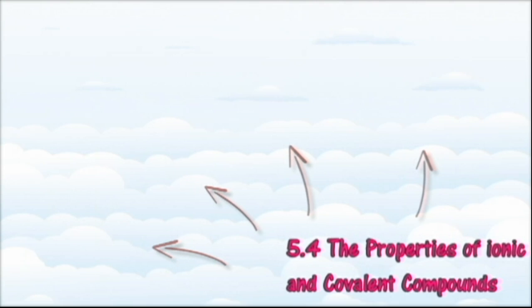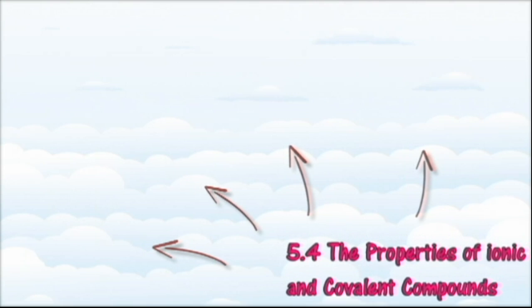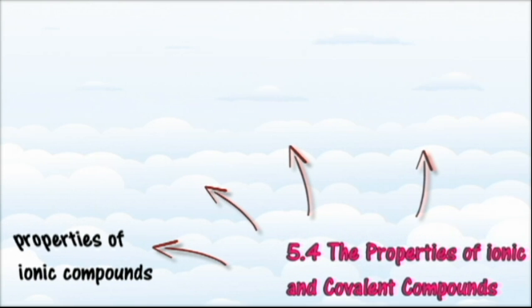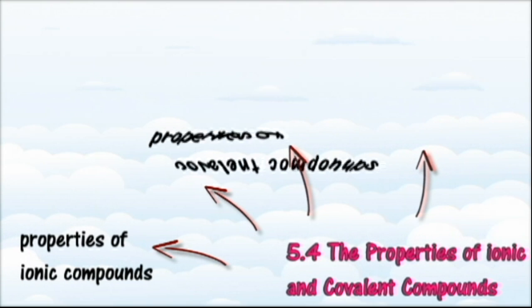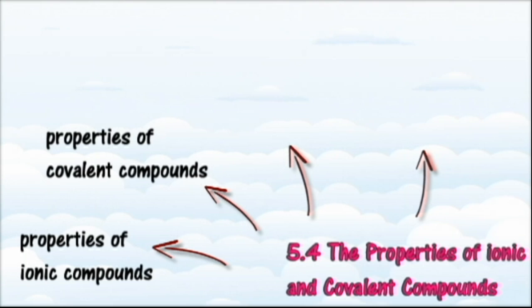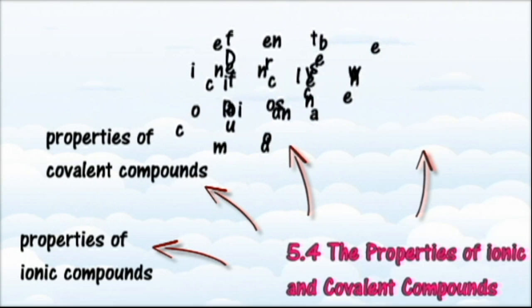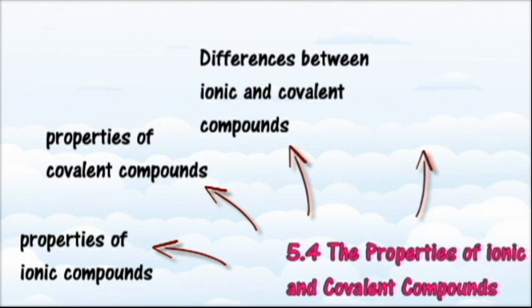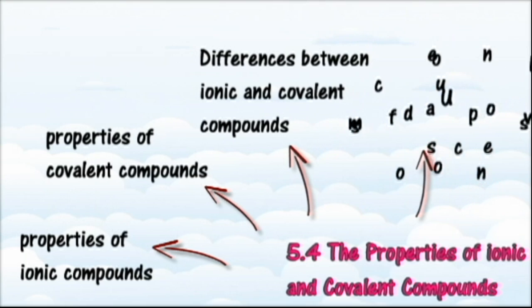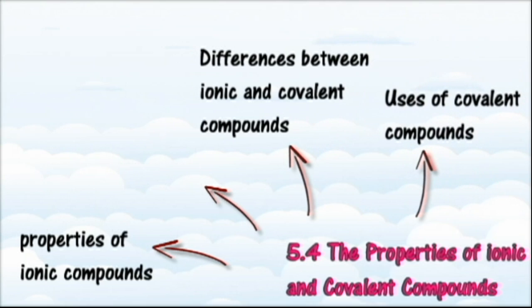In section 5.4 we will learn about the properties of ionic and covalent compounds. At the end of this section you should be able to list properties of ionic compounds and covalent compounds, explain differences in the electrical conductivity of ionic and covalent compounds, describe differences in melting and boiling points of ionic and covalent compounds, compare and contrast the solubility of ionic and covalent compounds, and state uses of covalent compounds as solvents. Thank you for taking the time to watch this.